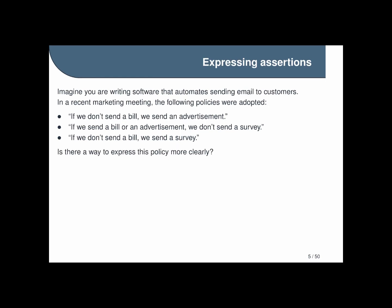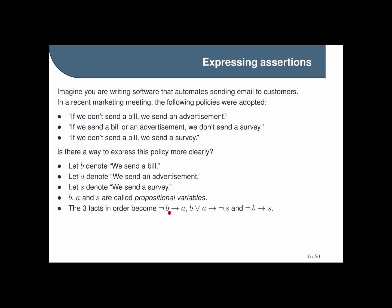Now a way we can approach this is to assign a variable to each of our basic statements. We say let b denote we send a bill, let a denote we send an advertisement, and let s denote we send a survey. These variables are called propositional variables and we can use them to rewrite our claims as formulas. So when we do that our three facts become not b implies a, b or a implies not s, and not b implies s.